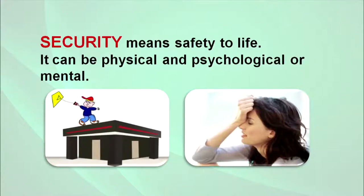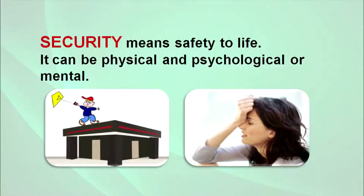In these two pictures you can easily see a child flying a kite on a rooftop where there is no bar or railing. There is a very high risk that this child, while flying the kite, can easily fall and get serious injuries. In another picture, you are seeing an adolescent girl who is disturbed — her mental or psychological security is at risk.